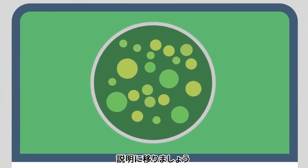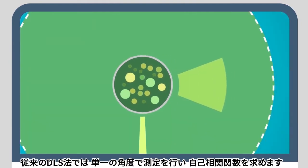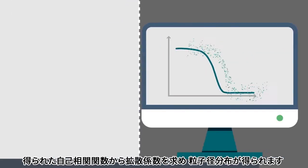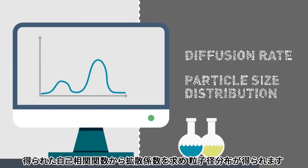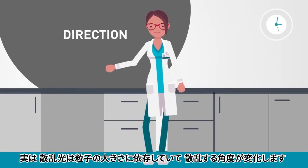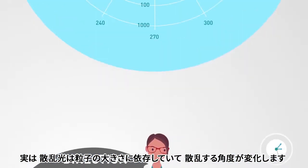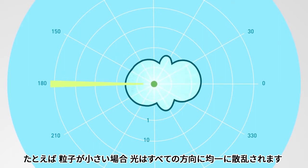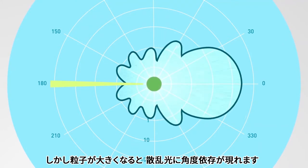With traditional DLS experiments, the scattered light is detected at a single angle and auto-correlated to determine the correlation function. The correlation function is used to calculate the diffusion rate of the particles, from which the particle size distribution is obtained. What's interesting is that the direction and the number of photons scattered depends on the size of the particle. For example, if the particle is small, light is scattered quite uniformly in all directions. However, if the particle is large, more light is scattered in the forward direction.